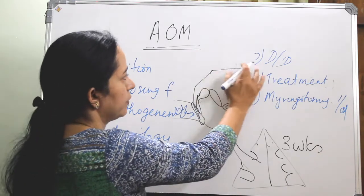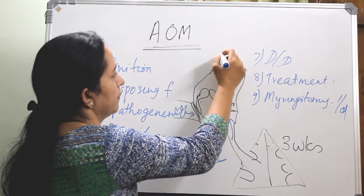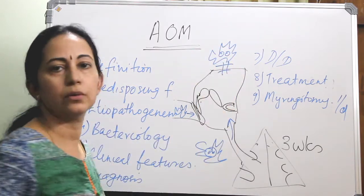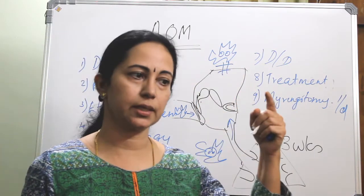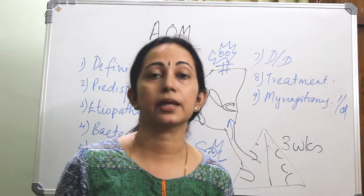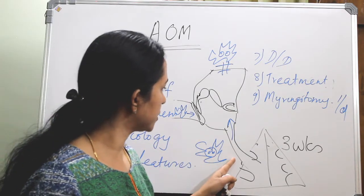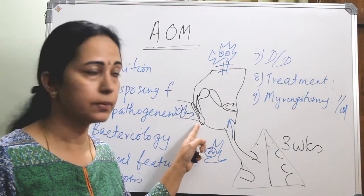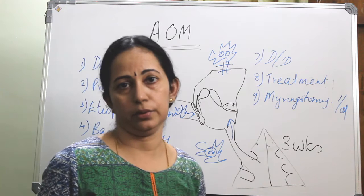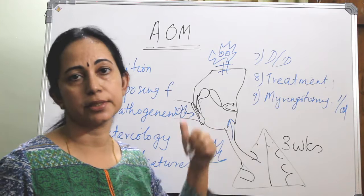So bacteria can come through a fracture of the temporal bone, or there can also be hematogenous or blood-borne infection. There are four routes of infection reaching the middle ear: through the eustachian tube, through a perforated tympanic membrane, through a fracture of the temporal bone, or hematogenous.